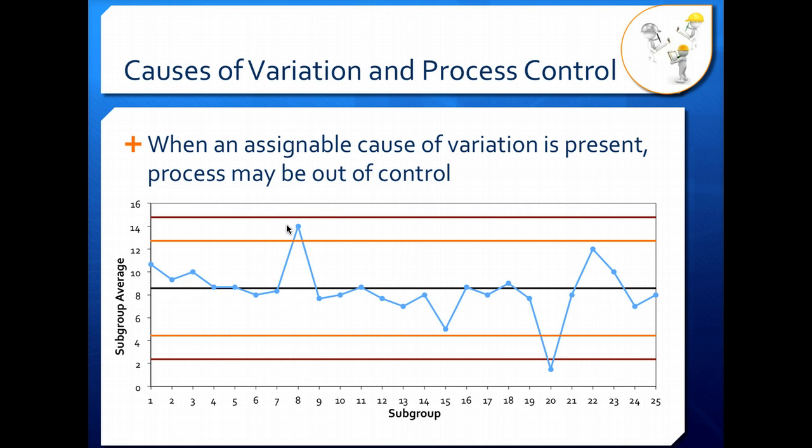This is the large change that we can assign a cause to. This is not a good scenario. This means your process is likely to be producing product that is not within specifications.